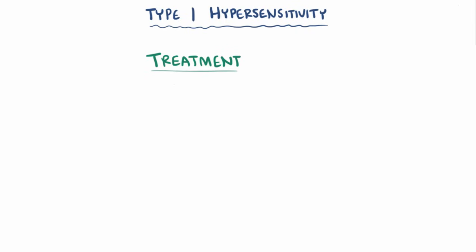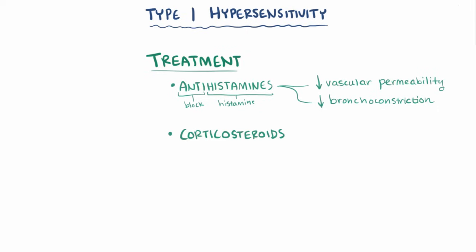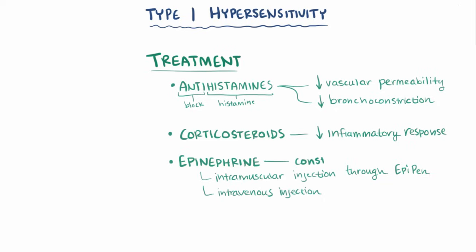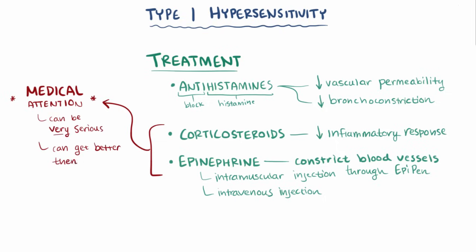Treatment for type 1 hypersensitivity can involve a variety of medications. Antihistamines act to block the effects of histamine, which reduces vascular permeability and bronchoconstriction. Also, there are corticosteroids, which can be used to reduce the inflammatory response, as well as epinephrine, which is sometimes given during severe reactions via intramuscular injections through an EpiPen or intravenous injection. Epinephrine can help constrict blood vessels and prevent anaphylactic shock. If there's ever a serious type 1 hypersensitivity reaction that requires something like steroids or epinephrine, it's super important to get medical attention, because type 1 hypersensitivity reactions can be really serious and can sometimes get slightly better before getting worse again.